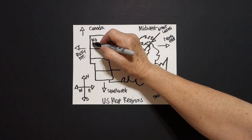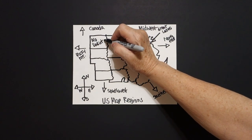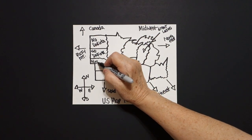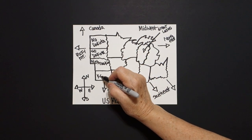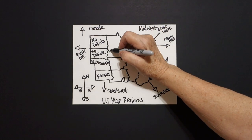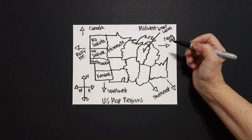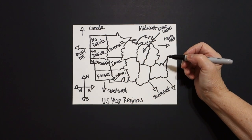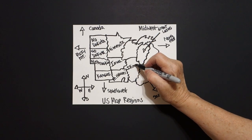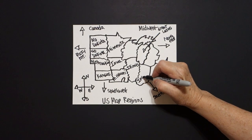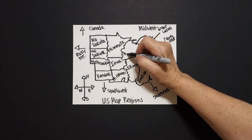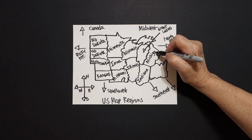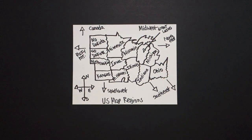Now, this is North Dakota. This is South Dakota. This is Nebraska. This is Kansas. Minnesota. Iowa. Missouri. Illinois. Indiana. Wisconsin. That's our Great Lakes. Michigan. And Ohio. Woo! It's a lot.